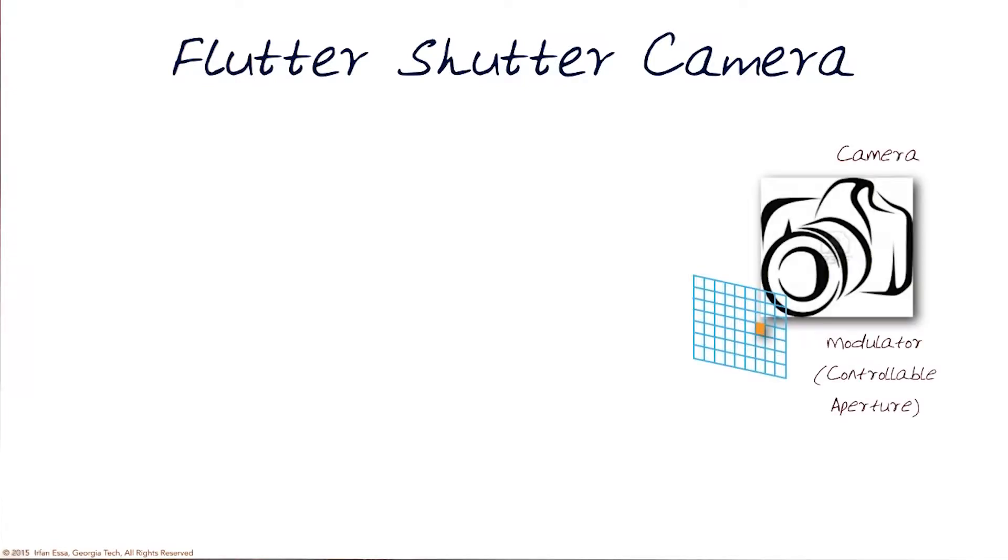Before we finish, I want to showcase another example of coded photography. This time we're going to talk about the concept of a flutter shutter camera. The flutter shutter camera attempts to do the same thing the coded aperture camera did, except rather than change the aperture, it changes the shutter.